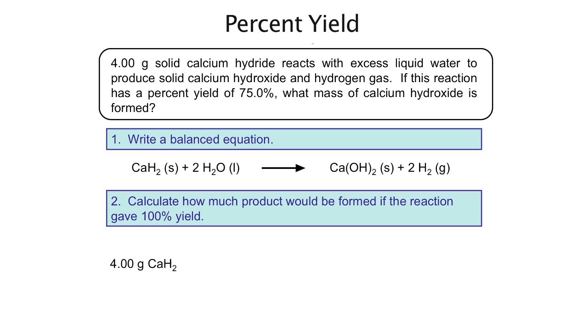I have 4 grams of it. Converting that to the number of moles by dividing by the molar mass and then multiplying that by the mole ratio between the product and the reagent, I find the number of moles of the product, the number of moles of calcium hydroxide.